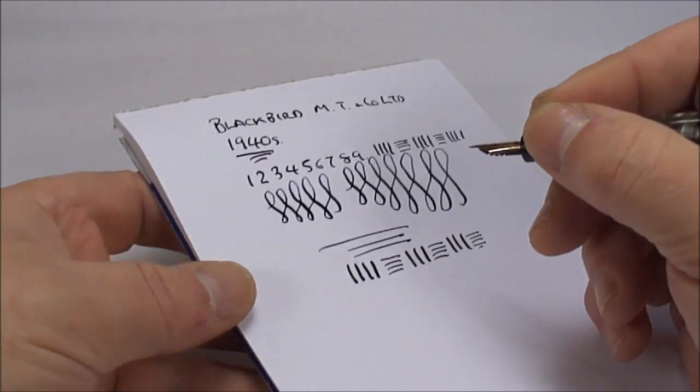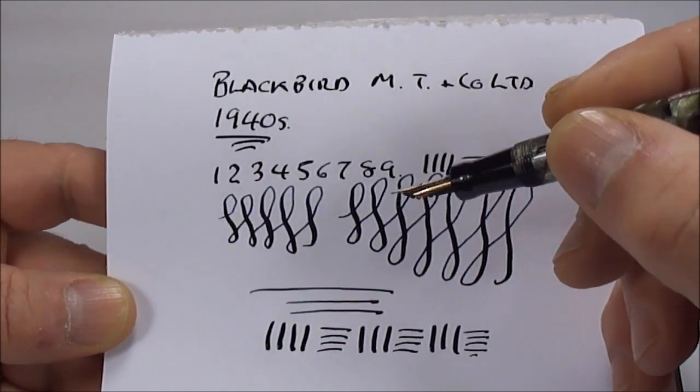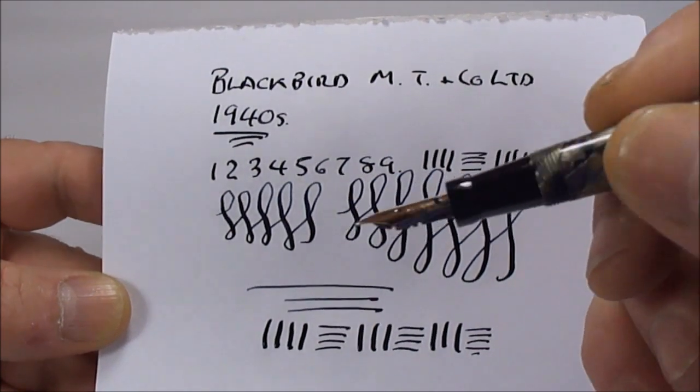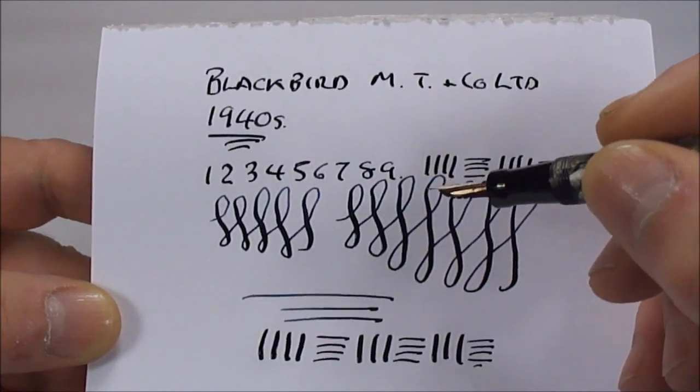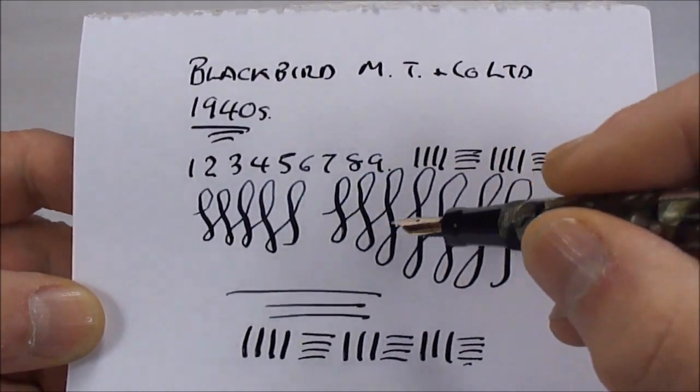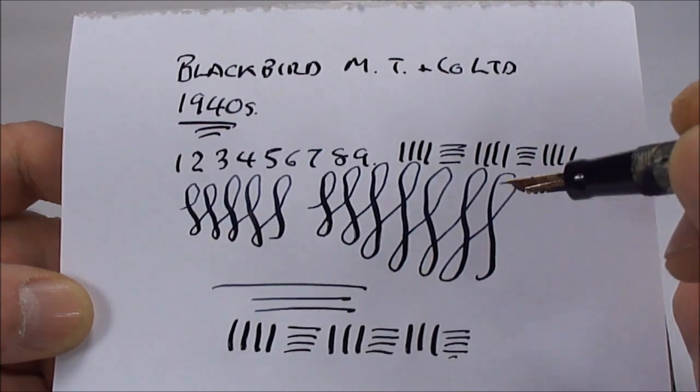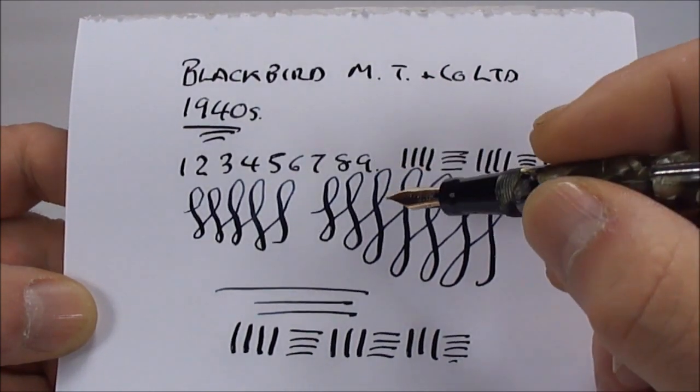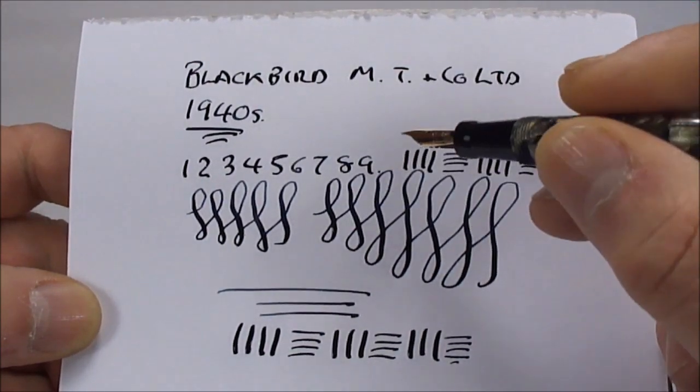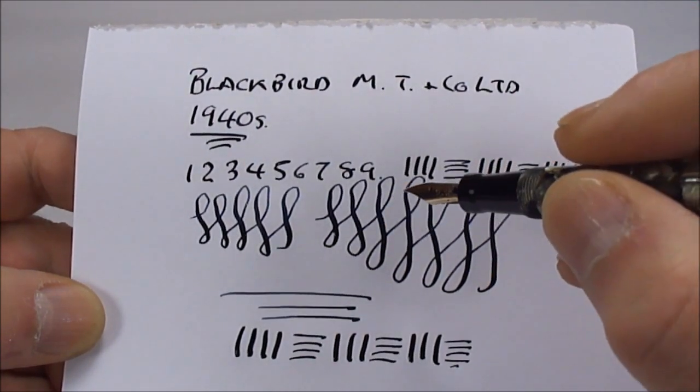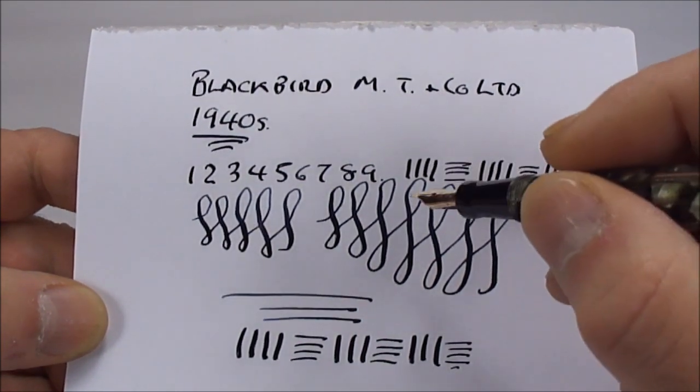So, as you'd expect from sort of Mabie Todd nibs, the Blackbird pen, it comes with a flexy nib and with some, not a lot of pressure actually, but with some pressure on the downward stroke, you can see we're getting a lovely variation in line. So, it's a lovely writer, as you can see, and writing very nicely with a nice wet flexy variation line.